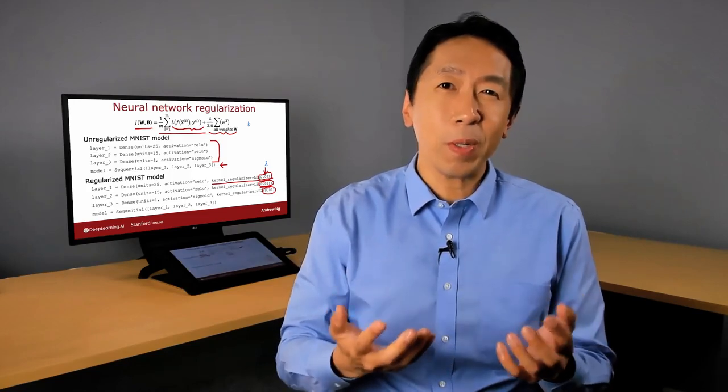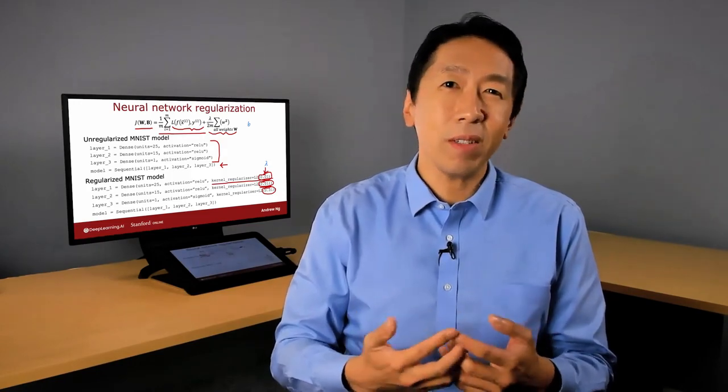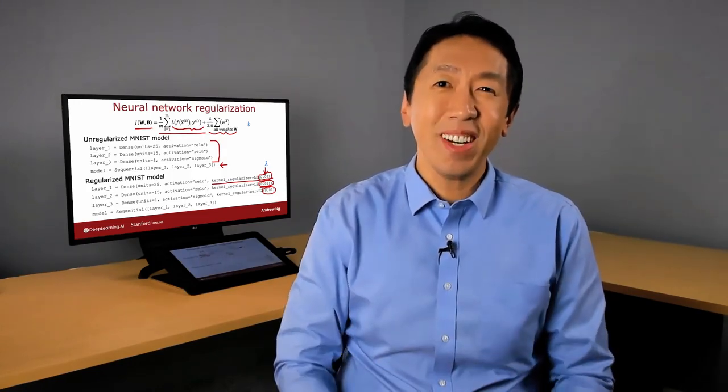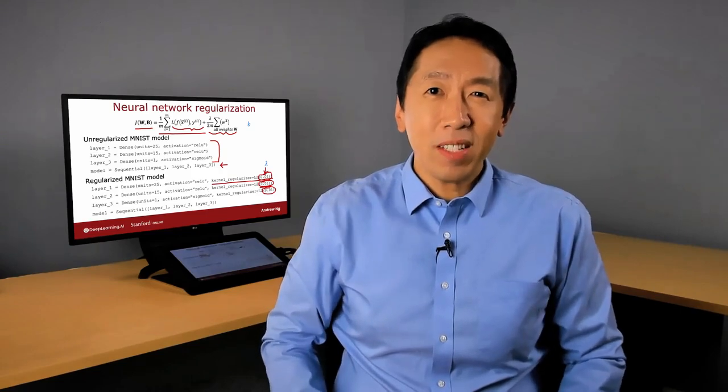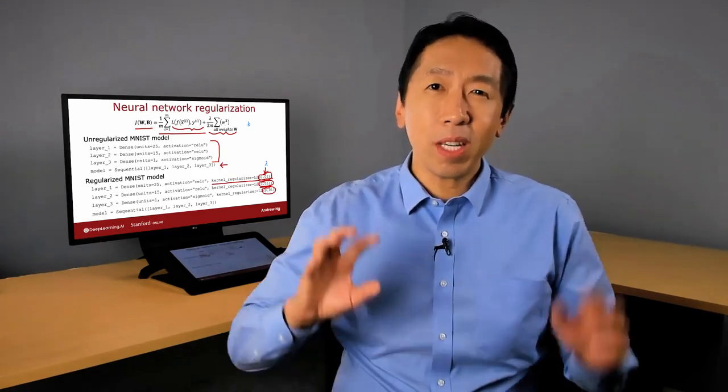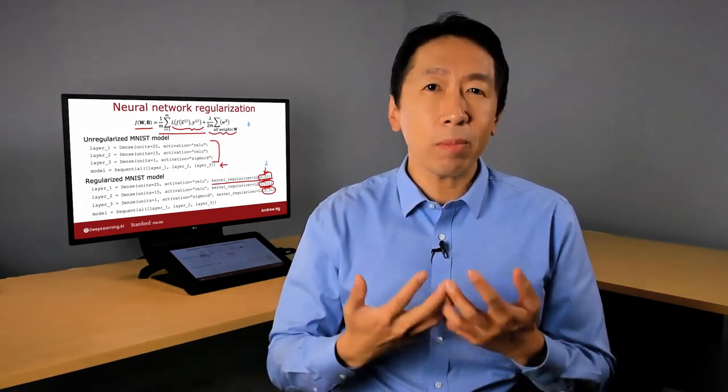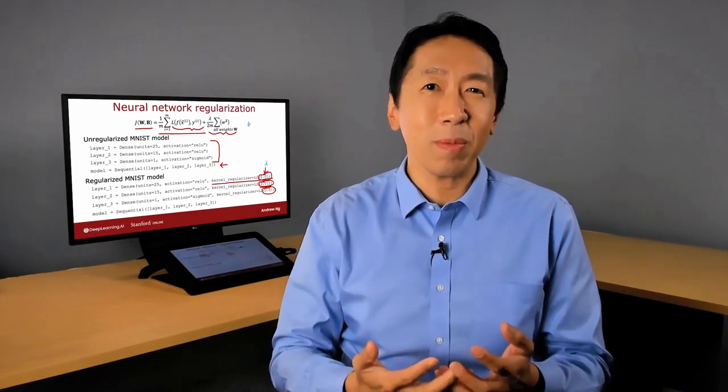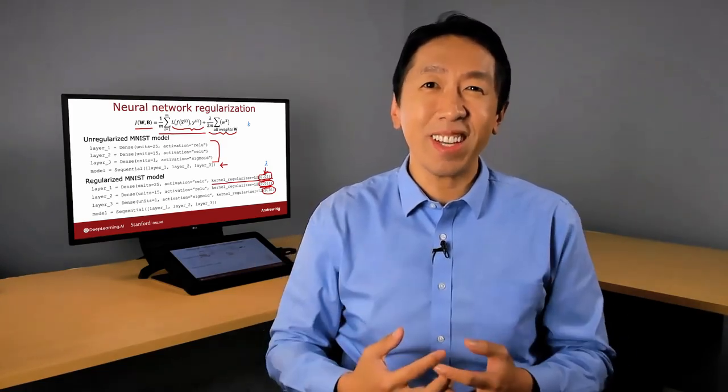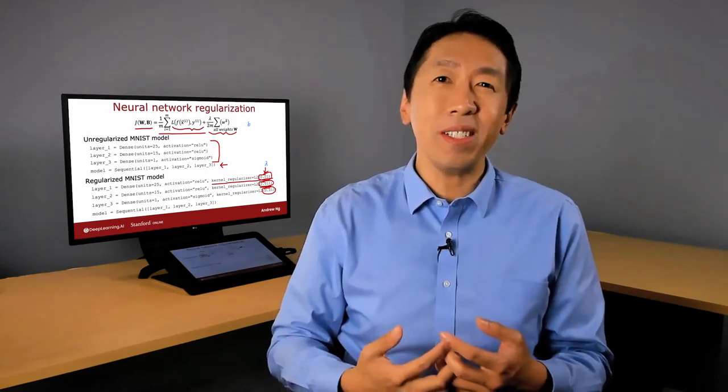Having said that, even when you're training a neural network, measuring bias and variance and using that to guide what you do next is often a very helpful thing to do. So that's it for bias and variance. Let's go on to the next video where we'll take all the ideas we've learned and see how they fit into the development process of machine learning systems. And I hope that will tie a lot of these pieces together to give you practical advice for how to quickly move forward in development of your machine learning systems.